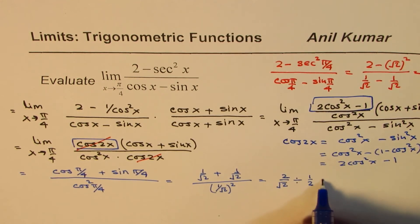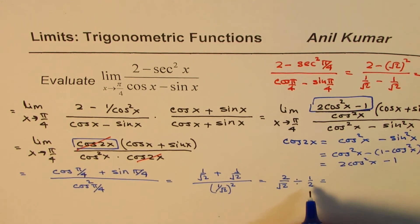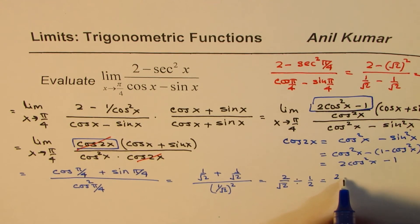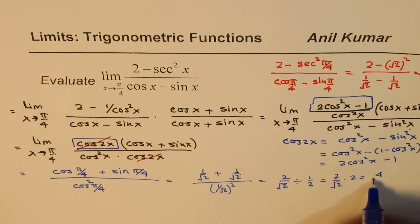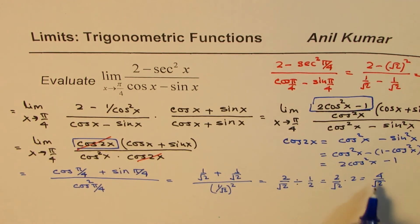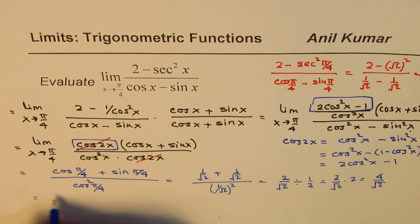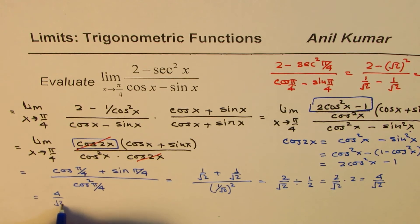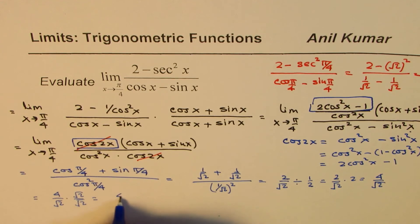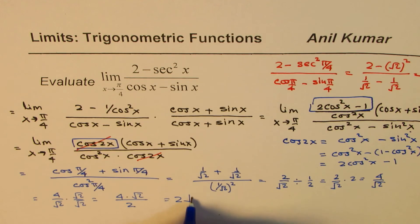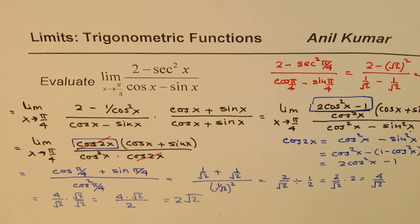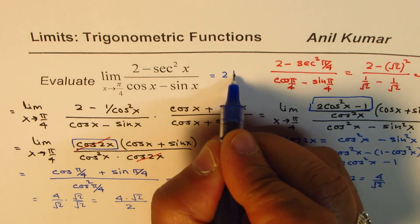The numerator gives 2 over square root 2, and dividing by one half gives us 2 over square root 2 times 2, which is 4 over square root 2. Rationalizing: 4 over square root 2 times square root 2 over square root 2 equals 4 times square root 2 over 2, which is 2 square root 2. So the answer is 2 square root 2.